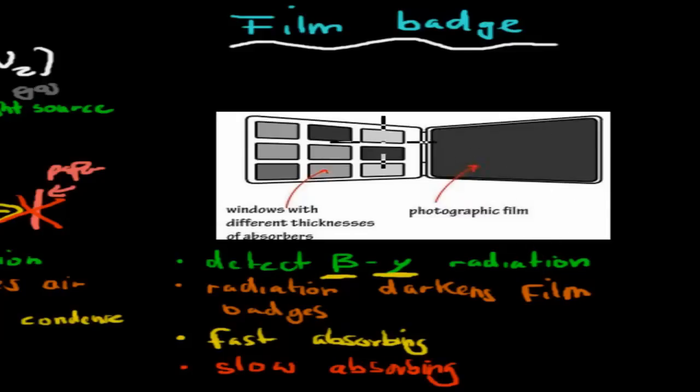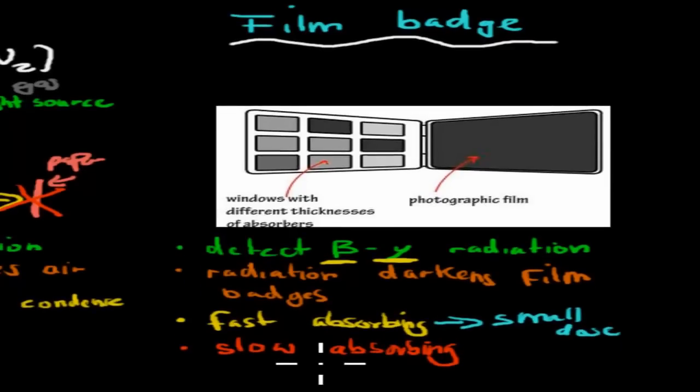And what happens is these films, you can see they're different shades. And when there is radiation present, they'll change color. There's usually different types of films. There's some which are fast absorbing, which means that even a small dose will make them change color. And that means that even if there's only a small amount of radiation, they will know it because that fast absorbing film has changed color. Whereas the slow absorbing one takes a lot longer. And this works with high doses. So if there's a high dose, then over time the slow absorbing film will also change color. So they can differentiate not only if there's radiation present, but how much radiation is also present.